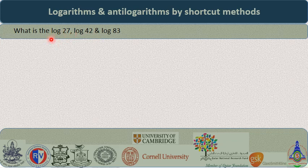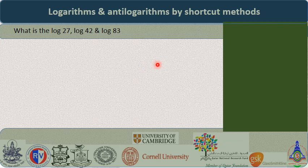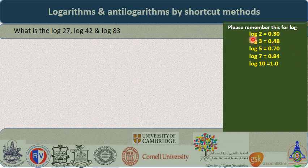To solve these problems, you need to have minimum information regarding log values. You should remember these: log 2 = 0.301, approximated to 0.30; log 3 = 0.4771, approximated to 0.48; log 5 ≈ 0.70; log 7 ≈ 0.84; log 1 = 0, and log 10 = 1. All other log values will be calculated using multiples of 2, 3, 5, 7, and 10.